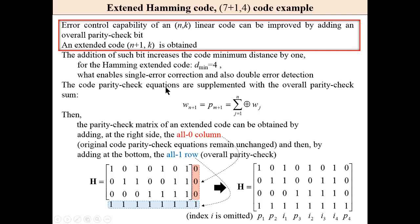The code parity check equations are supplemented with the overall parity check sum. The parity check matrix of the extended code can be obtained by adding an all-zero column to the right side of the regular Hamming code matrix, keeping the original parity check equations unchanged, and then adding an all-ones row at the bottom corresponding to the overall parity check. We then have 4 parity check bits, with P sub 4 as the last bit of the codeword.